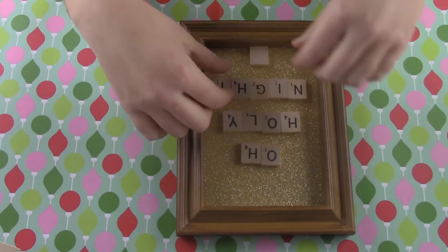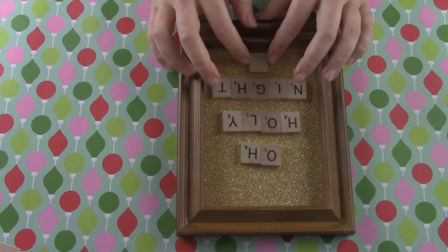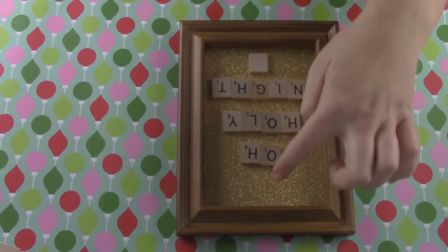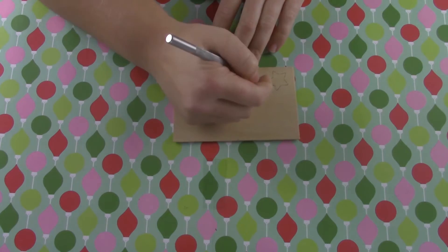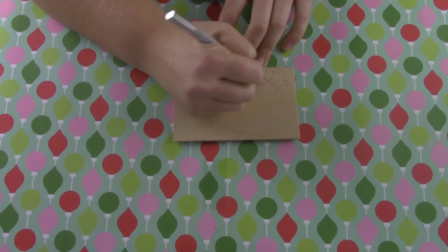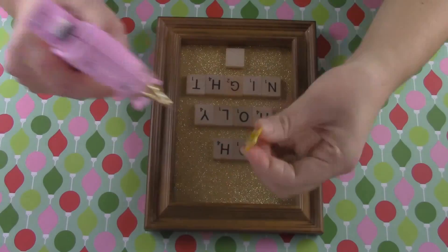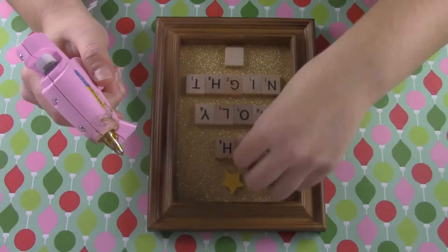Put that back into the picture frame and put the back back onto the picture frame. Now you can arrange your letters how you want them to be. I'm having mine say O Holy Night in the shape of a tree. Then trace your star on the balsa wood or cardboard and cut it out.